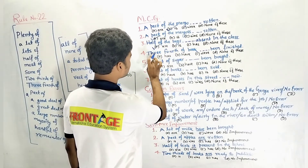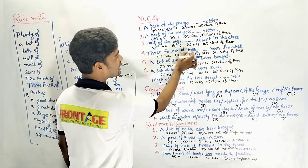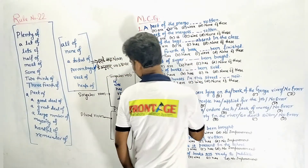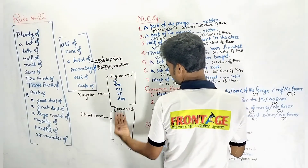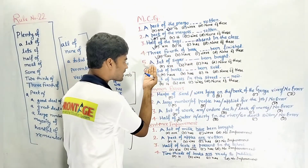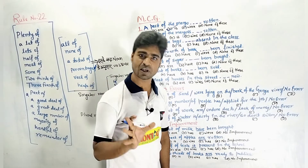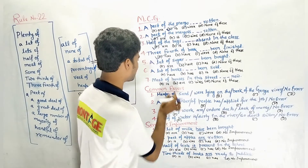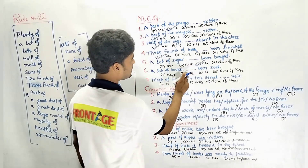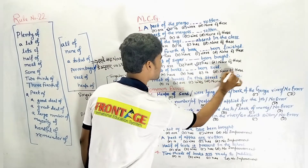Three fourth of the book — dash — been finished. Here we have singular, so similar verb applies. Next: A lot of sugar — dash — been about. Sugar is uncountable, and uncountable is always singular. So the option is 'has'. Next: A lot of books — dash — been sold. A lot of books is plural, so the answer is 'have'.